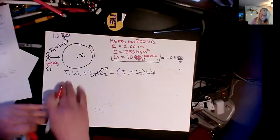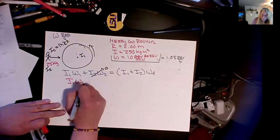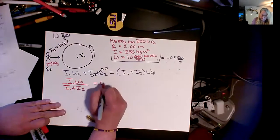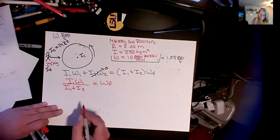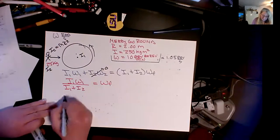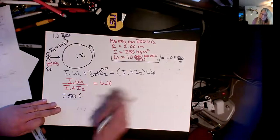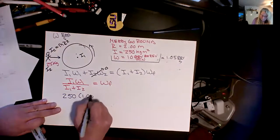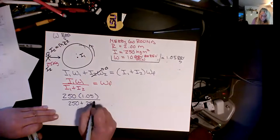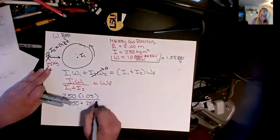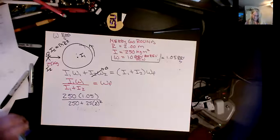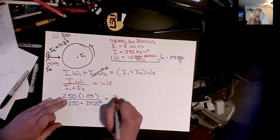So then I can rewrite this in terms of i₁ω₁ divided by the sum of their inertias. i₁ plus i₂ gives me how fast it's spinning in the end. So let's see. I have i₁ω₁, so I've been given that value. I don't have to do any math to that. 250 times this 1.05 divided by 250 plus 25 times the radius, this 2 meters squared. And I get that that equals 0.75.